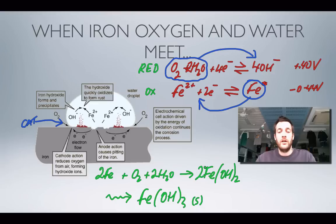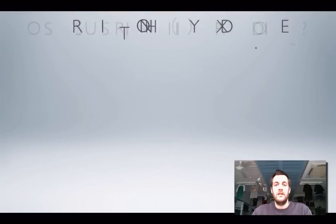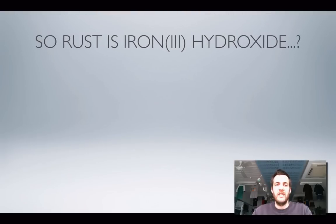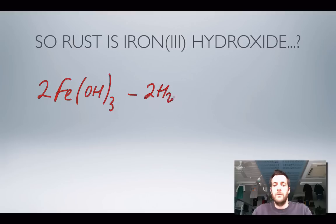Now just quickly to finish with, we're going to look at why it is that if we're making these substances, why rust isn't just one of those two. This isn't really tested or examined very much, but it's just worth bearing in mind that what can happen is if we've got iron hydroxide, by the time your piece of iron dries out, so by the time you've lost some water from it, you can actually turn your iron(III) hydroxide into iron oxide.